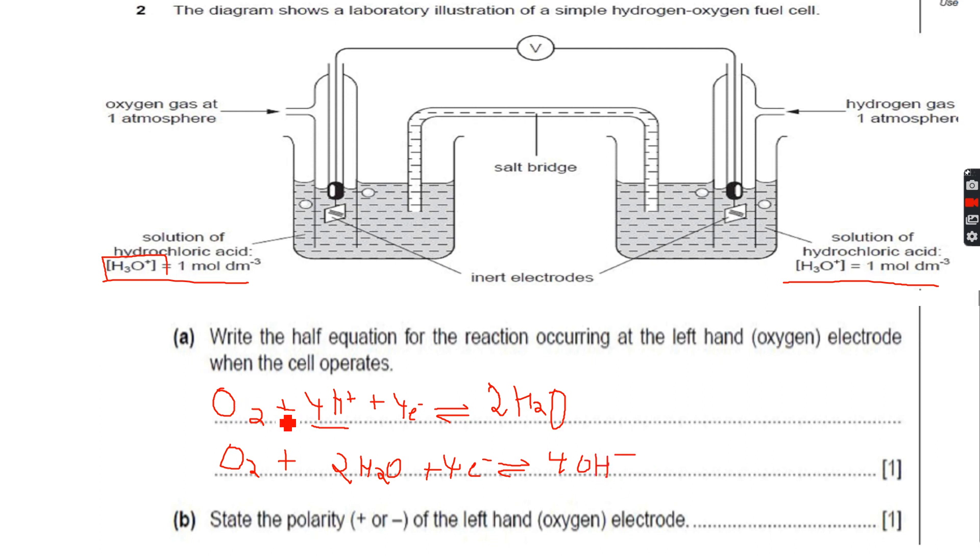In this case, instead of H⁺ ions you have OH⁻ ions, which means alkali. So if it's acidic solution you will use this one, if it's alkaline solution you will use this one. Right now we will use the one on the top because it's acidic solution.